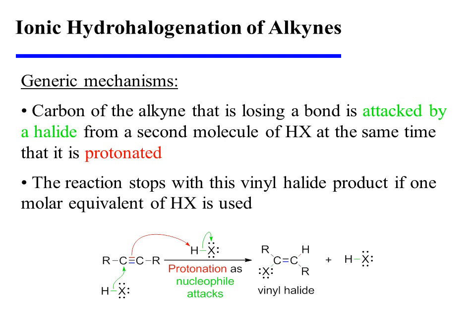Instead, during the protonation step, the carbon of the alkyne that would otherwise have lost a bond is attacked by a halide from a second molecule of HX. This occurs concurrently with the protonation. So the net result is still the addition of HX across the alkyne pi bond, but the high-energy vinylic carbocation was bypassed.